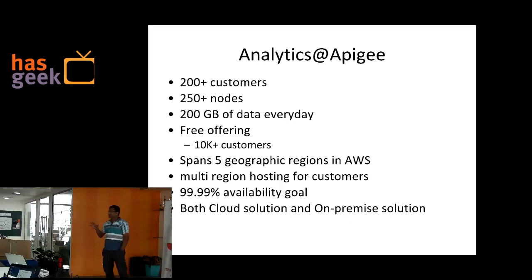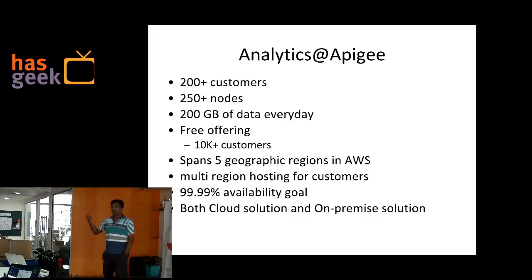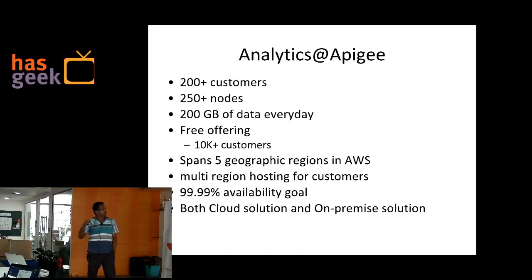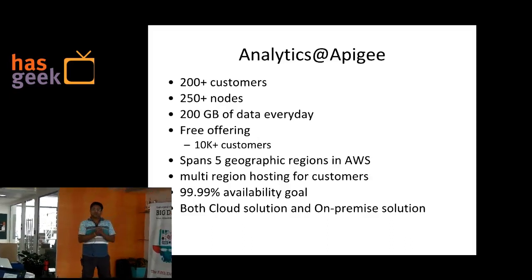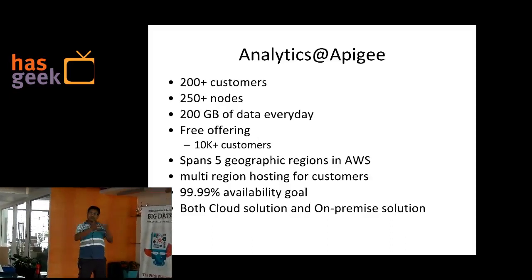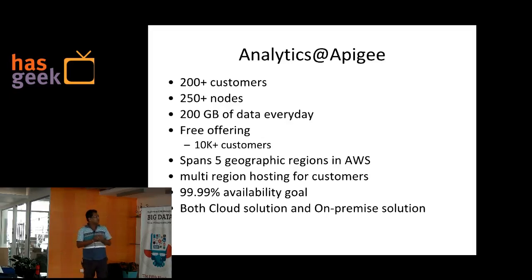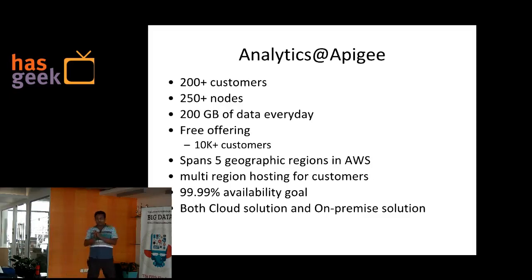The whole system spans across five regions: US East, West, EU, Southeast APEC, and Northeast APEC across AWS. Many of the enterprise customers have a multi-region deployment of their system and therefore we have to collect data from all of these places. Our availability goal is 99.9 with four nines — we have not reached there yet but we are trying to get there.